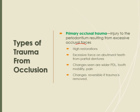If a restoration is placed too high, the patient is told to come back if it hurts, and the bite is adjusted. One to two teeth cannot support all the force of occlusion. The good news is that if you fix the problem — adjust the bite or change the contour — the irritation and inflammation will resolve. Changes from primary occlusal trauma are reversible if the excessive force is removed.